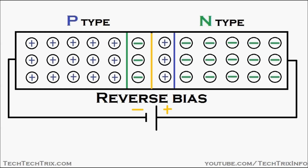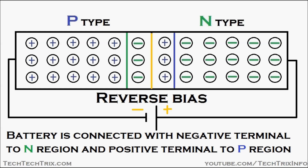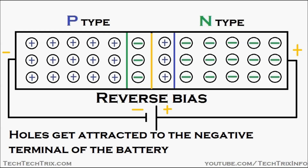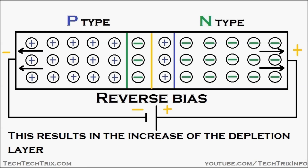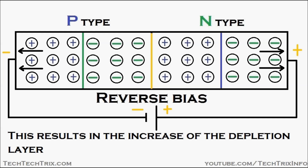For reverse bias in a PN junction semiconductor, the negative terminal of the battery is connected towards the P-type semiconductor and the positive terminal is connected towards the N-type semiconductor. Holes get attracted to the negative terminal and electrons get attracted towards the positive terminal, as shown in the animation. This results in the increase of the depletion region, or space charge region, as seen in the animation.